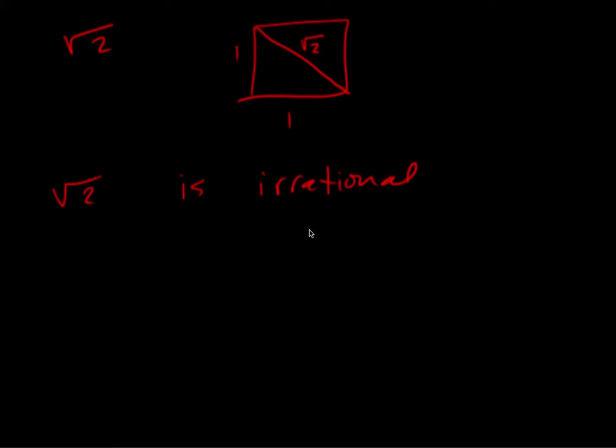Okay, here's another proof by contradiction. We're trying to prove that square root of two is irrational. Our first statement is that it is rational, and so square root of two could be p over q where...